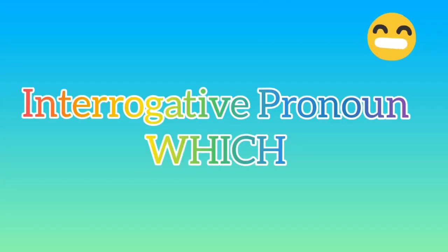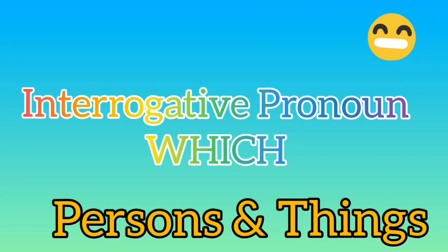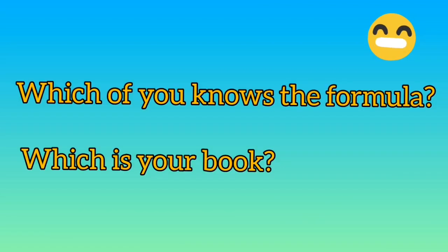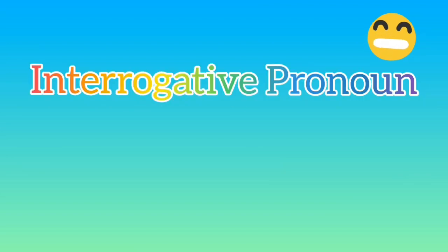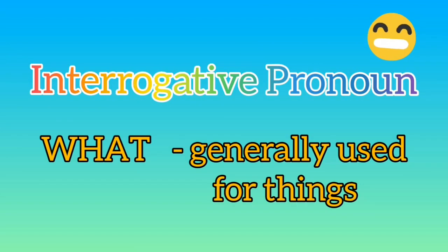The interrogative pronoun 'which' is used for both persons and things. For example: 'Which of you knows the formula?' and 'Which is your book?' The interrogative pronoun 'what' is generally used for things.